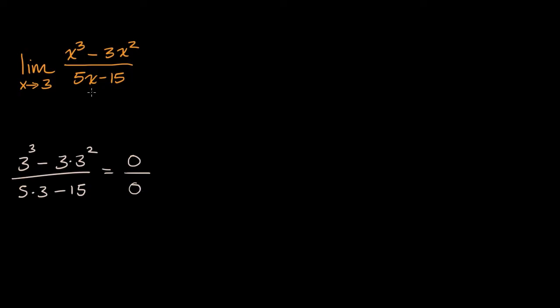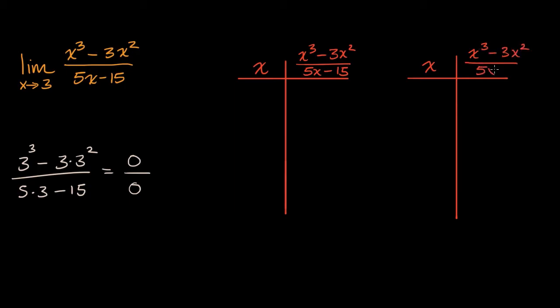But let's see, even though the expression is not defined, let's see if we can get a sense of what the limit might be. And to do that, I'm going to set up a table. So let me set up a table here. And actually, I'm going to set up two tables. So this is x and this is x³ minus 3x² over 5x minus 15. And actually, I'm going to do that again. And I'll tell you why in a second.